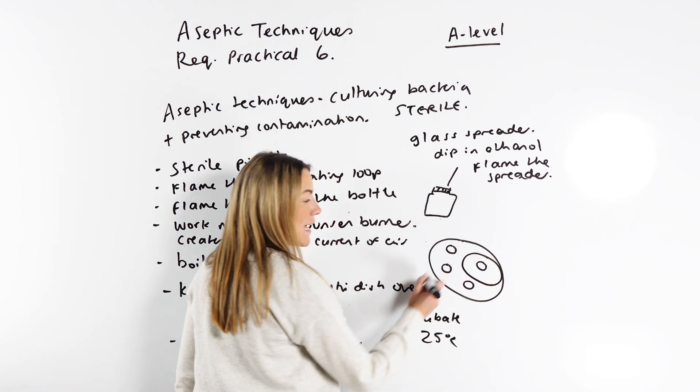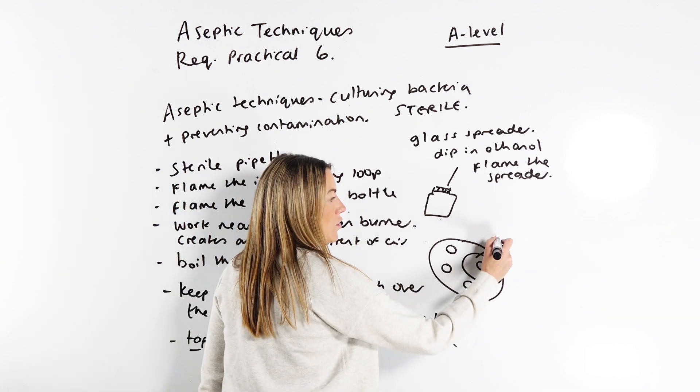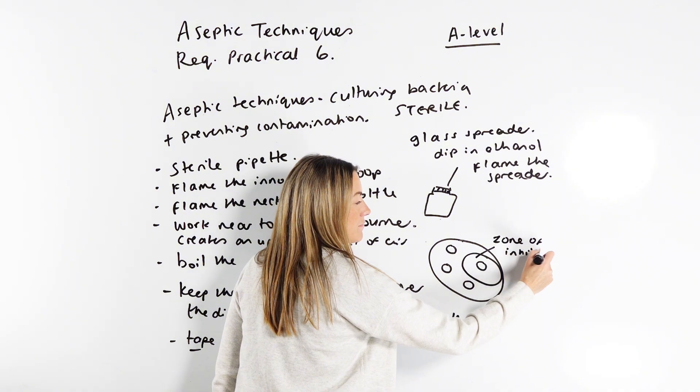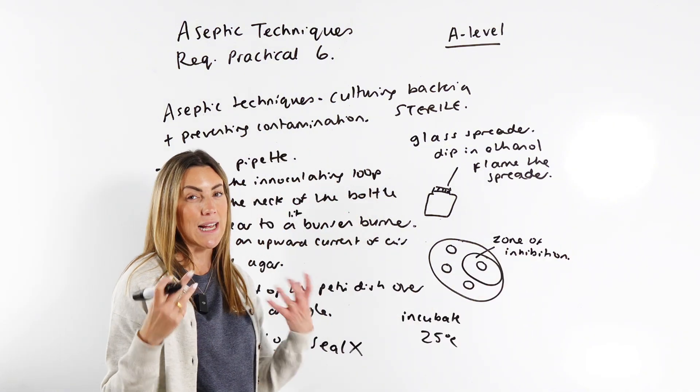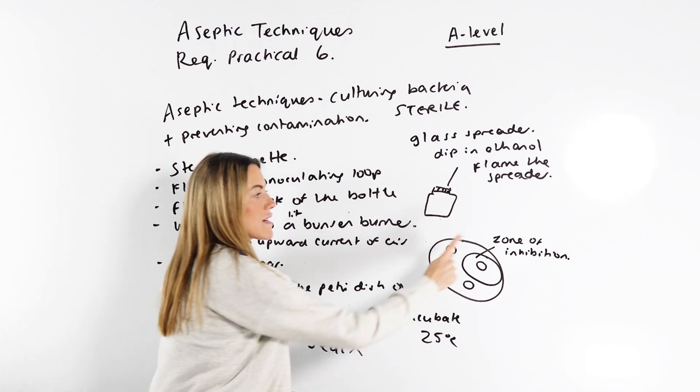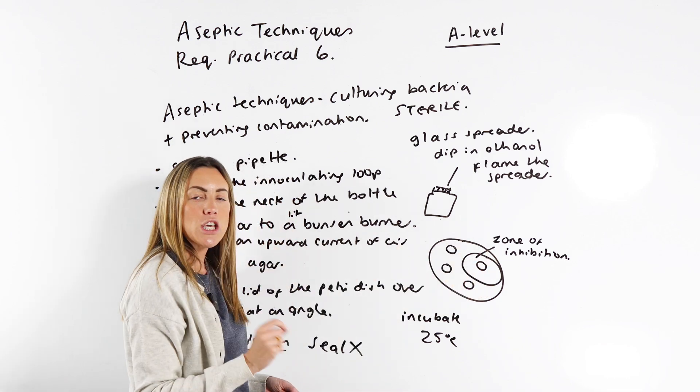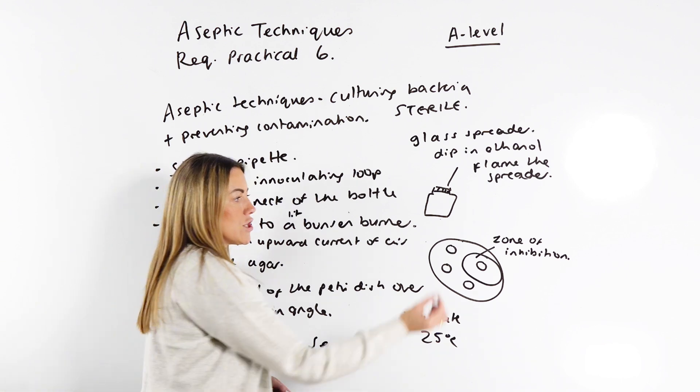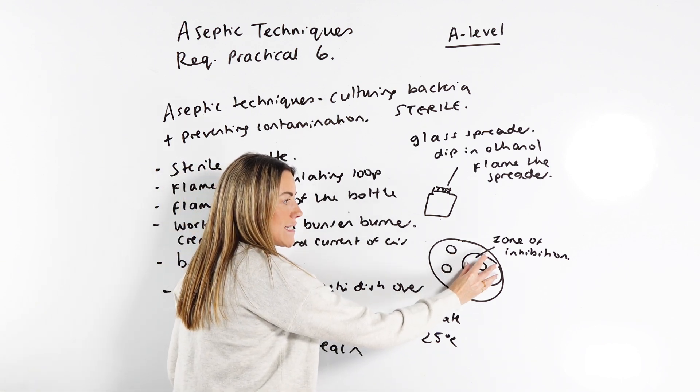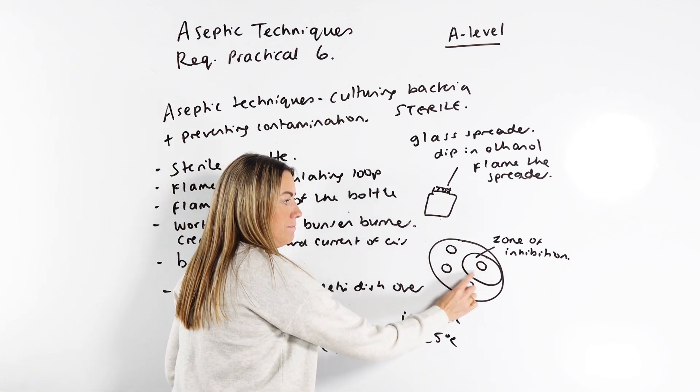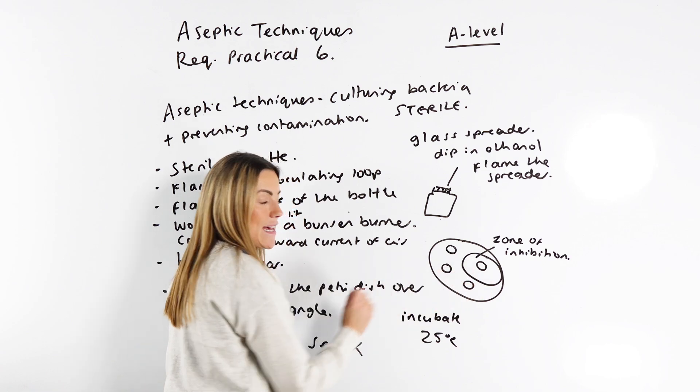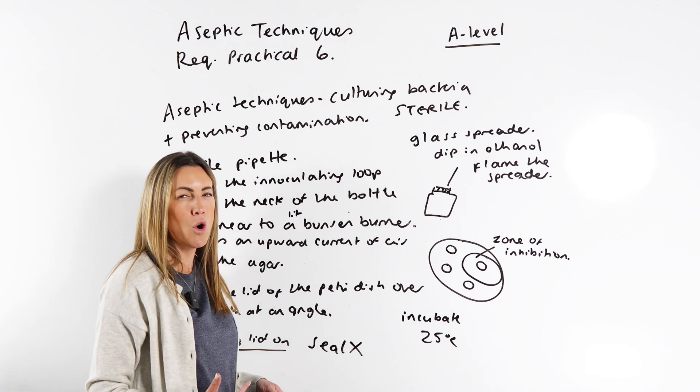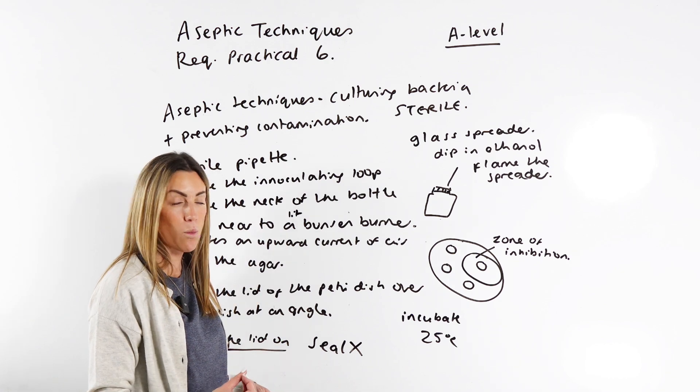If you see something like this, this is called a zone of inhibition. It's not good enough to just call it a clear area. But where you get a zone of inhibition, that's telling you the bacteria has been killed. So the antibiotic diffused into the agar. It killed all the bacteria in this area. And obviously, the larger the zone of inhibition, the more effective that antibiotic was.